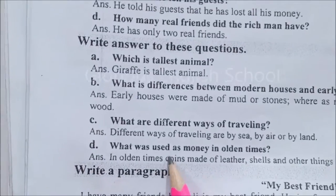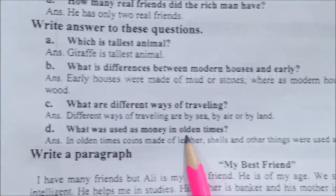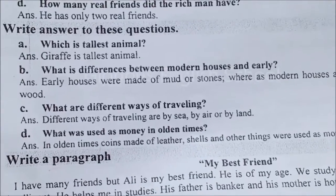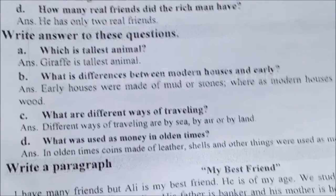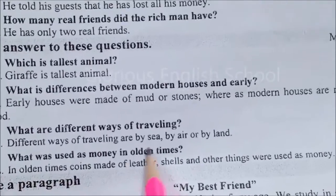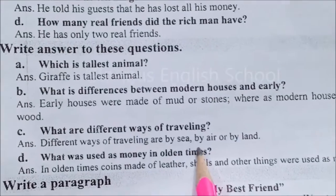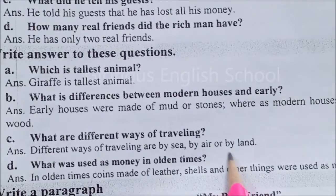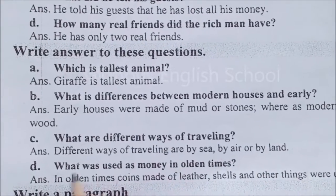Question number three: what are the different ways of traveling? Safar karne ke kaunse kaunse tareeqe hain? Different ways of traveling are by sea (samandar ke zariye), by air (hawai tareeqe se), and by land (zameen ke zariye).